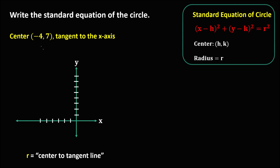For this given, the circle is tangent to the x-axis. Plotting the center: x is negative 4 and y is positive 7, counting 1, 2, 3, 4, 5, 6, 7. We connect to locate the center of the circle. The x-axis is the tangent line. The radius goes from the center to the tangent line.